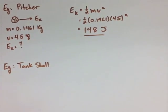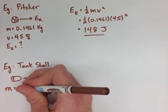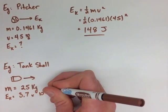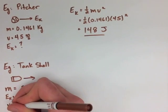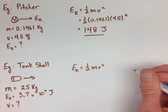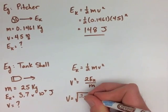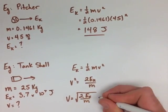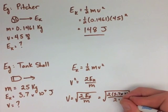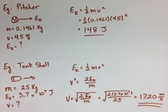Next, if we look at shooting a tank shell, we have a tank shell that's 25 kilograms with energy of 3.7 × 10⁷ joules, and we're trying to find the velocity. We need to rearrange our kinetic energy formula for velocity. We get velocity equals the square root of 2 times kinetic energy divided by mass. So we have the square root of 2 × 3.7 × 10⁷ over 25 kilograms, which gives us 1720 meters per second.